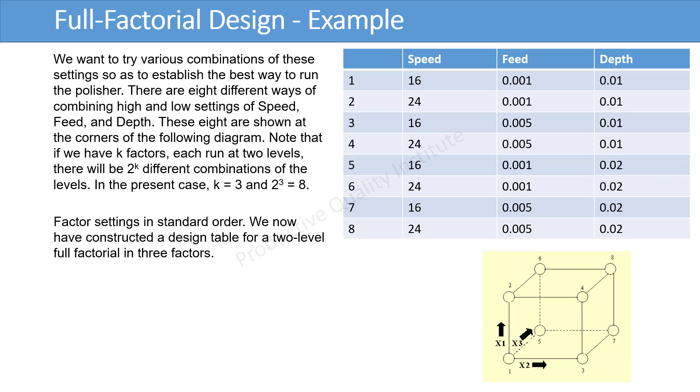There are 8 different ways of combining high and low settings of speed, feed, and depth. These 8 are shown at the corners of the diagram. Note that if we have k factors, each run at 2 levels, there will be 2 to the power k different combinations of the levels. In the present case, k is equal to 3, and 2 to power 3 is equal to 8.